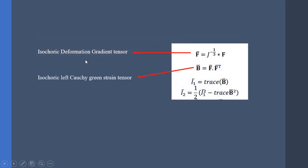So what is the isochoric formulation? In this formulation, we take out the volume effects from the deformation gradient tensor, especially when we use incompressible materials. B̄ is F̄ multiplied by F̄ transpose, and Ī₁ and Ī₂ are derived using these formulas.